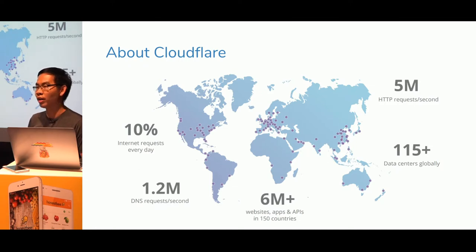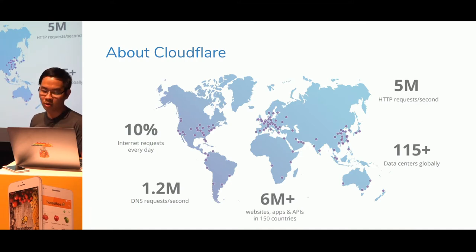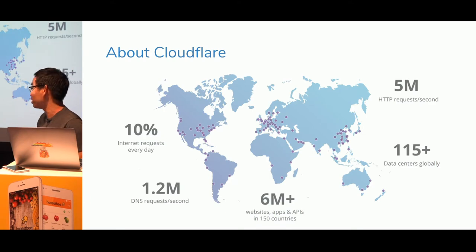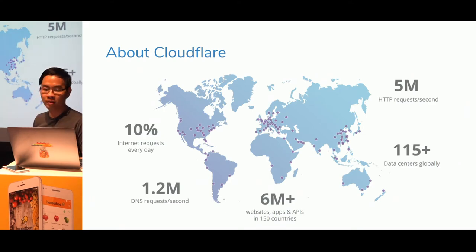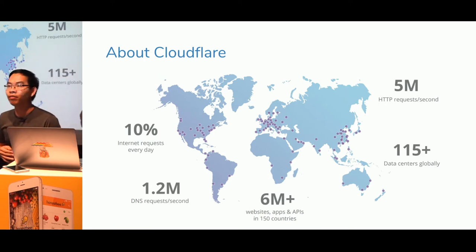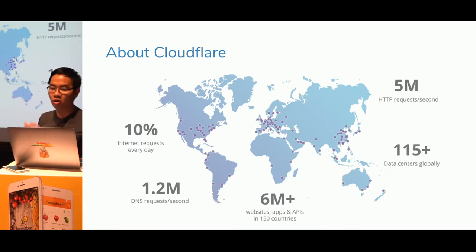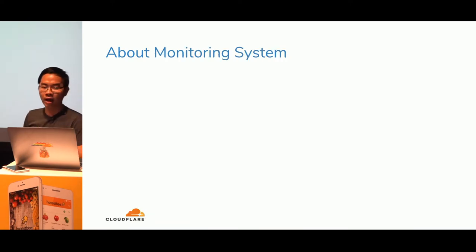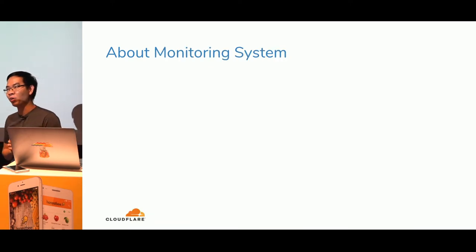We're doing more than a million DNS requests per second on average, every day. We have 115 data centers around the world — there's a big one in Singapore as well — and we call them Points of Presence. We have around six million websites using Cloudflare. So we talk about Cloudflare and about monitoring systems — that's why we're here.